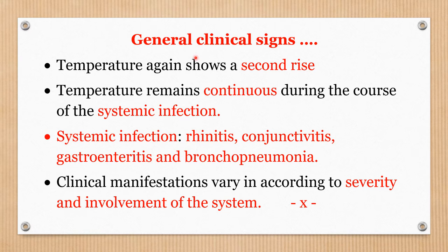The biphasic fever pattern is as follows: first there is high temperature of 103 to 104 degrees Fahrenheit lasting three to four days, then the temperature returns to nearly normal and remains so until around the 11th day, and then there is a second rise of temperature — hence it is called biphasic. Temperature remains continuous during the course of systemic infection because canine distemper virus is a systemic infection with most body systems involved.